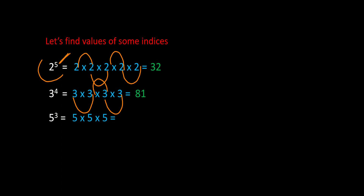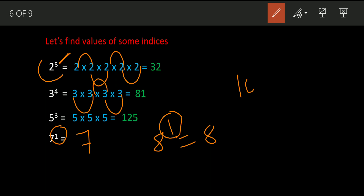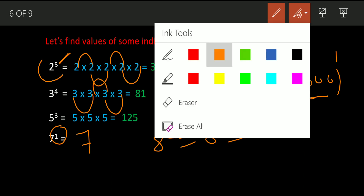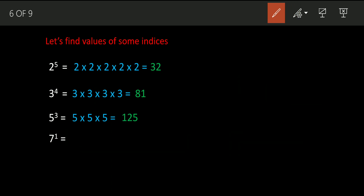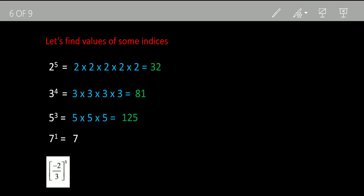Now five raised to three: five into five into five — 25, then 125. So the value of five cubed is 125. Now suppose I give you seven raised to one. The first power of any number is the number itself. Whatever number you have, its first power equals that number itself — for example, b raised to one is just b.